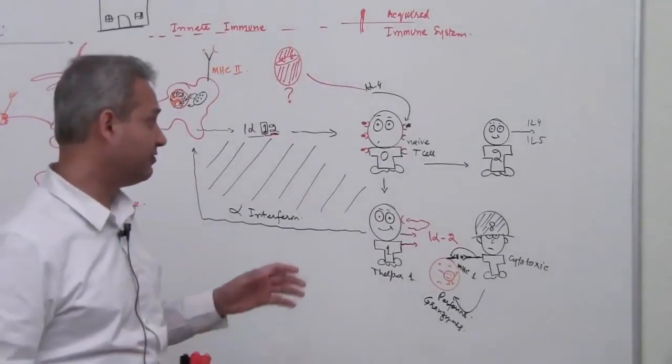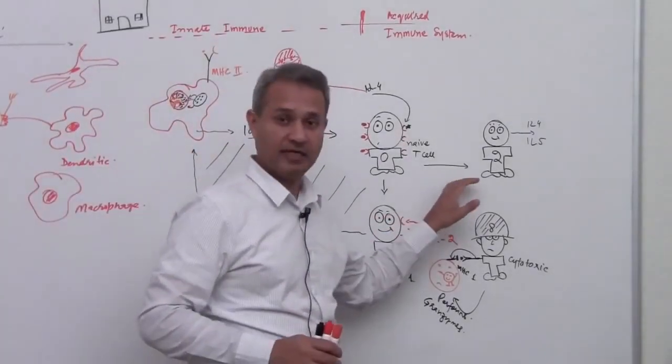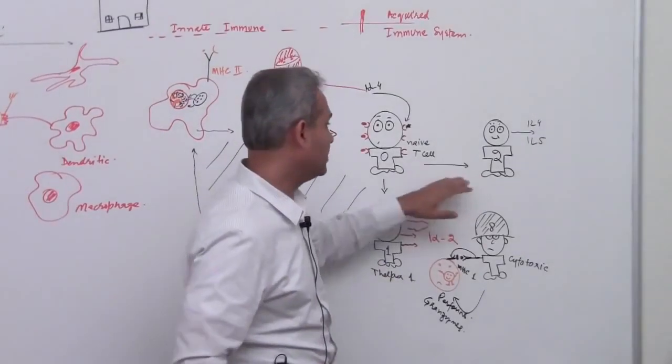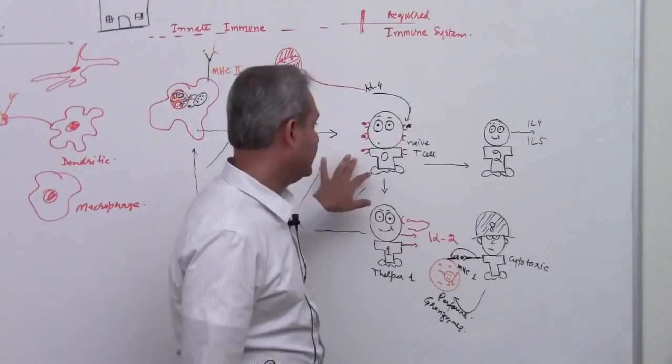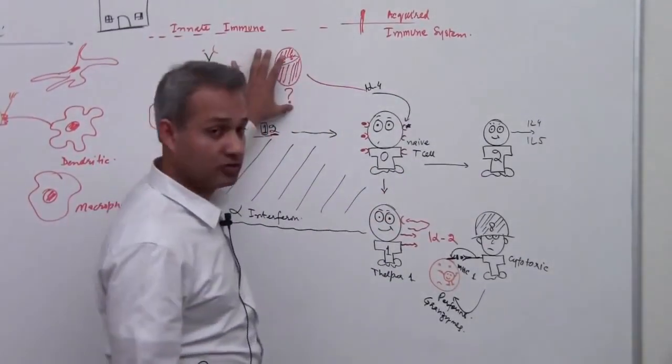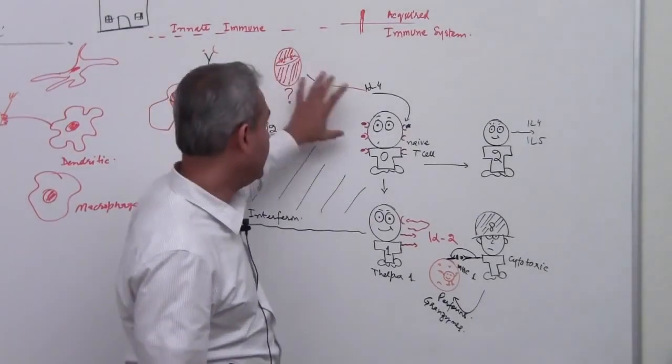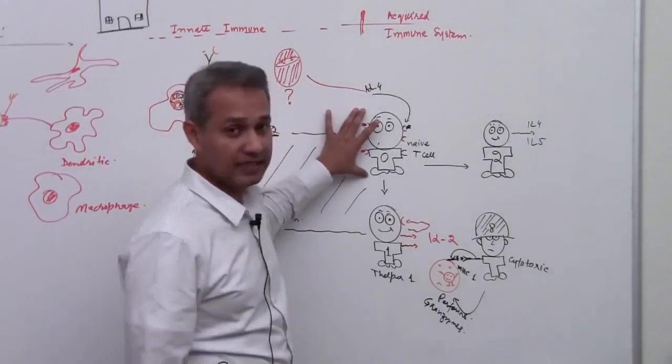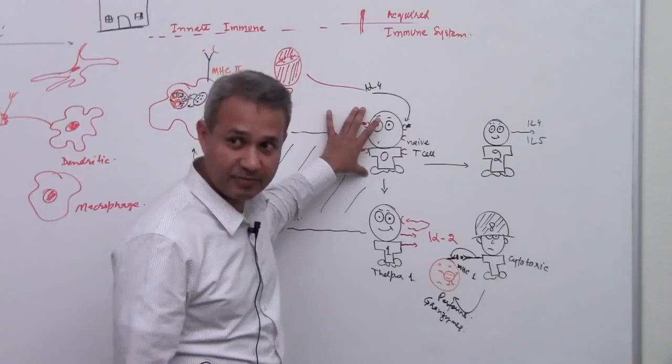Okay, so we will continue our discussion. In our last lecture we talked about an unknown cell which will act on the naive T helper cell.